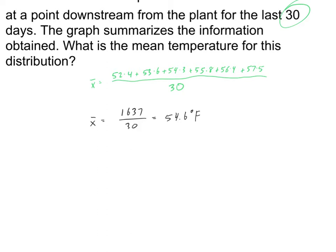We can think of our mean formula a little bit differently when we have a frequency distribution. The mean x-bar is the sum of x times f — each data point times its frequency — divided by the sum of all of the frequencies. So when you have a frequency, you need to multiply your data point times the frequency, and then divide by the sum of all of the frequencies.